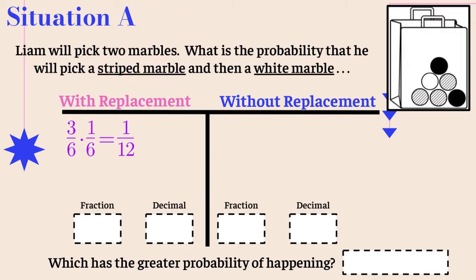Three out of six times one out of six equals one twelfth. Now without replacement: the first pick is still three out of six striped marbles. But when we take one out and don't replace it, we only have five marbles left. So it's three out of six times one out of five. Three times one is three, six times five is thirty, and three over thirty reduces to one tenth.